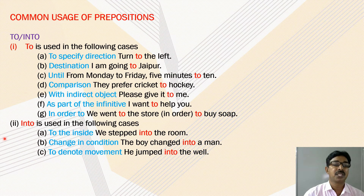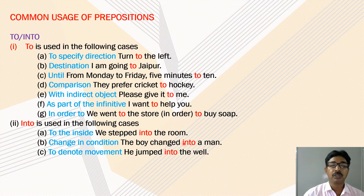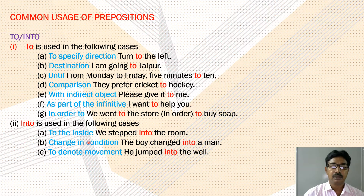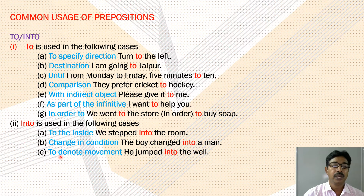'To' is also used with an indirect object — for example: please give it to me. 'To' is also used as part of the infinitive — for example: I want to help you. 'To' is also used to mean 'in order to' — for example: we went to the store to buy something. 'Into' is used to show entering — for example: we step into the room. 'Into' is also used for change in condition — for example: the boy changed into a man. And 'into' is used to denote movement — for example: he jumped into the well.